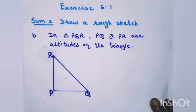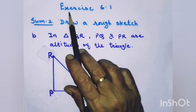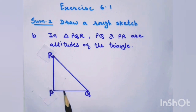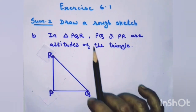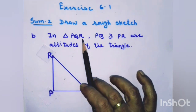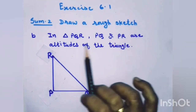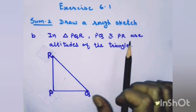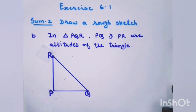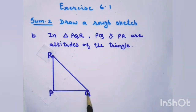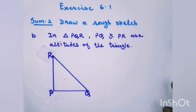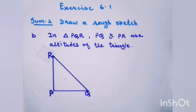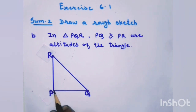Students, now we will solve sums from exercise 6.1. Here we have to draw a rough sketch of triangle PQR in which PQ and PR are altitudes of the triangle. You know that an altitude is the perpendicular line segment drawn from the vertex to the opposite side. So here PQ and PR are the perpendicular line segments drawn from vertex P to the opposite side.